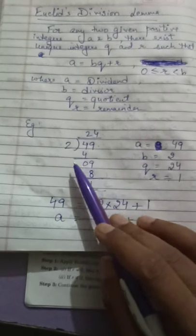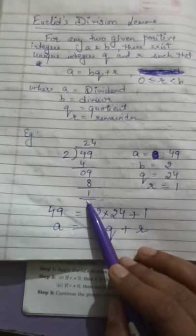Let's talk about a division where 49 is being divided by 2. Here, 49 is your dividend, 2 is your divisor, 24 is your quotient, and 1 is your remainder.